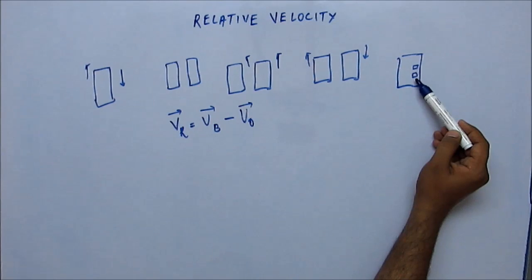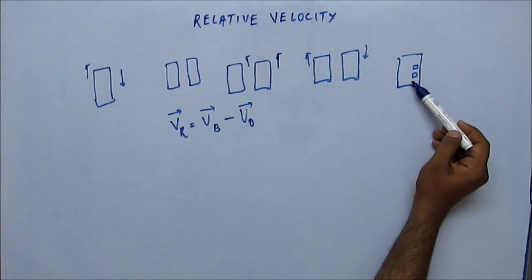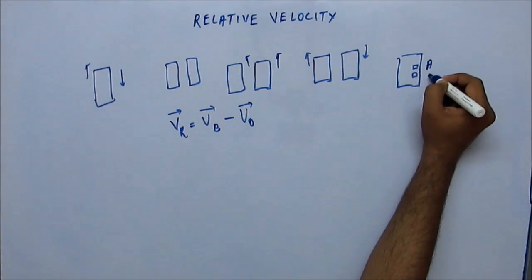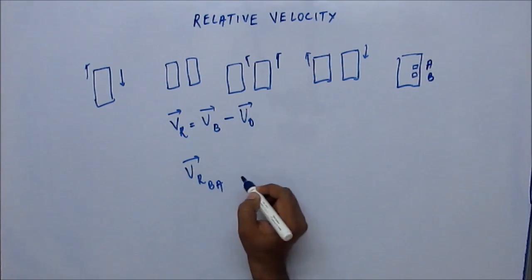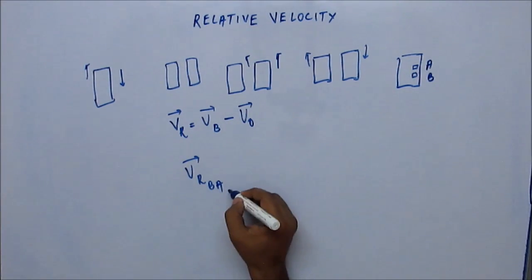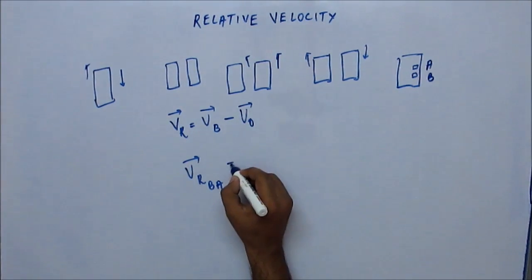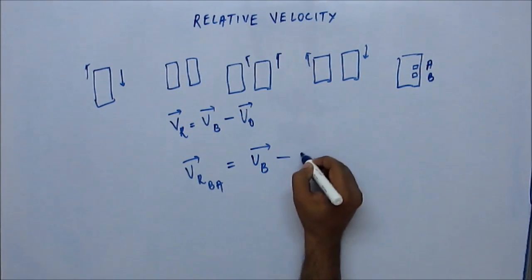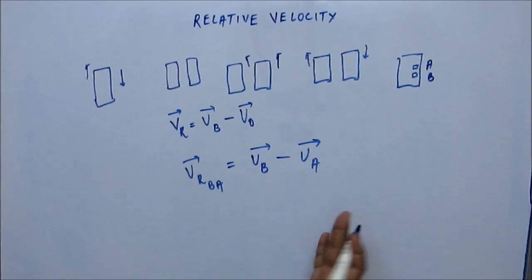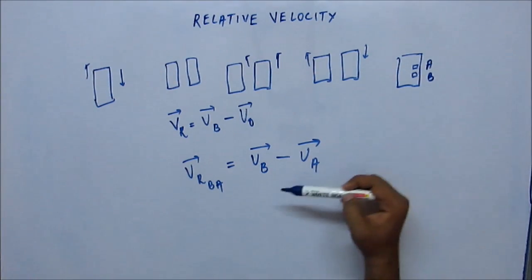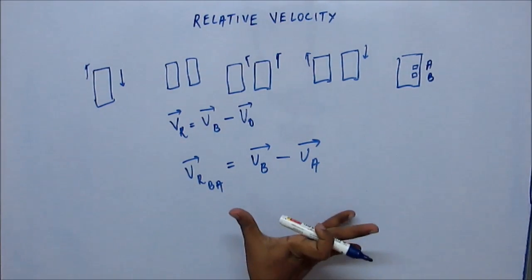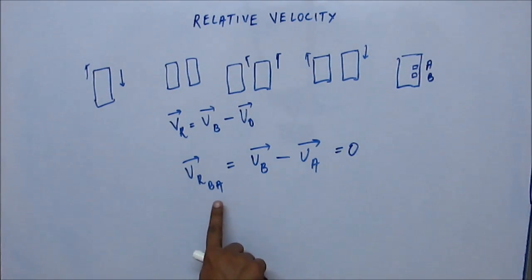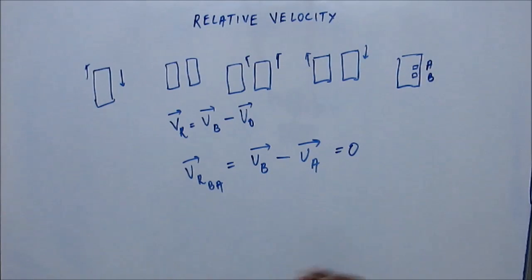Now suppose the observer is moving. Consider two people, A and B, sitting in the same train. The relative velocity of B with respect to A is written as V_BA, which equals velocity of B minus velocity of A. Since both are on the same train, velocity of B equals velocity of A, so the difference is zero. That's why the relative velocity of B with respect to A comes out to be zero — confirming the formula.